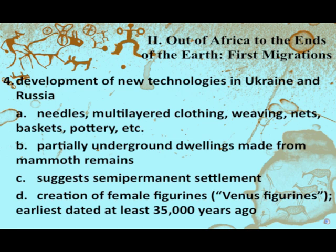Partially underground dwellings made from mammoth remains were semi-permanent. There's a belief in cycles seen in religion and culture, tied to the migration patterns of animals. People traveled in cycles — not aimlessly from point A all the way to point B, but rather A, B, C, D, and back to A, B, C, D — following seasonal patterns. It wasn't a one-directional movement; it was a definite cycle tied to seasons, plants, and animal migrations.